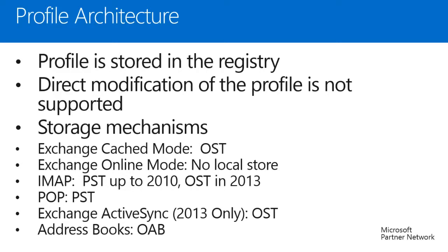In addition to the profile itself we use several storage mechanisms for different types of accounts. Exchange cached mode uses an OST that is stored within the user profile. Exchange online mode does not have a local store — anything you're accessing in exchange online mode is a request to the exchange server. IMAP accounts are stored in a PST up to Outlook 2010. In Outlook 2013 IMAP accounts are stored in an OST, similar to exchange cached mode.